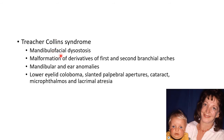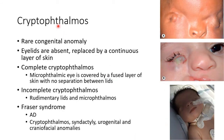Now let us discuss about Treacher Collins syndrome, also known as mandibulofacial dysostosis. In Treacher Collins syndrome, there is malformation of derivatives of the first and second branchial arches, leading to mandibular and ear anomalies. Clinical features include lower lid coloboma, slanted palpebral apertures, cataract, microphthalmos, and lacrimal atresia. This picture shows a baby and her mother with Treacher Collins syndrome.